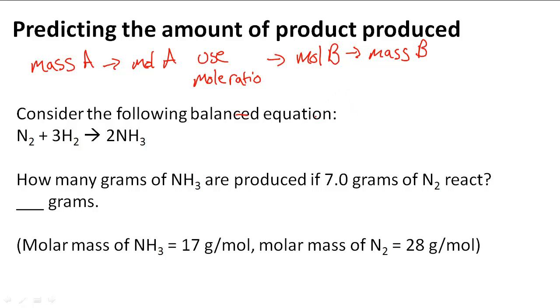So we have the mass of A, so we have 7.0 grams of N2. To find the moles of N2, what we have to do is divide by the molar mass, which is 28 grams per mole. And then we get 0.25 moles. And that is the moles of A, the moles of N2.